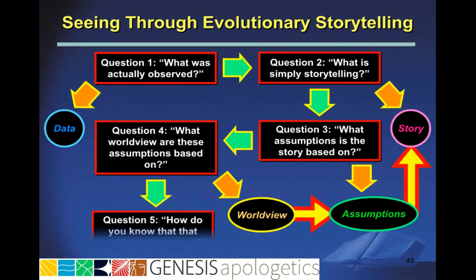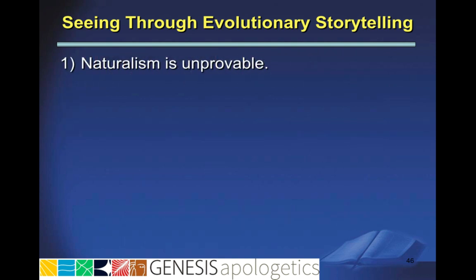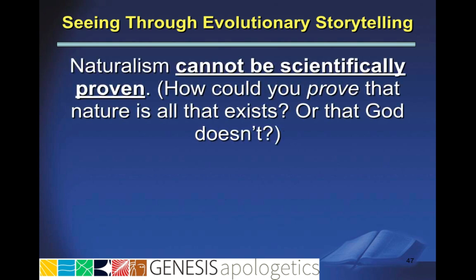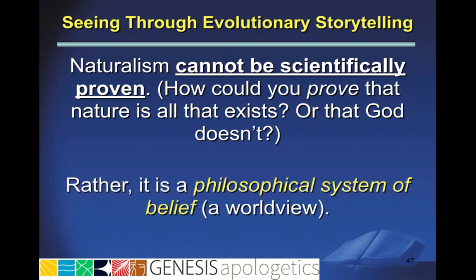The last question you want to ask is: how do you know that that worldview is correct? It's a really important question to ask, and I suspect that probably most teachers and even scientists have not really thought through this question. The first problem with the worldview of naturalism is that it is unprovable. Naturalism cannot be scientifically proven — how could you prove that nature is all that exists, or that God doesn't exist? Rather, naturalism is a philosophical system of belief, a worldview, something that people accept before they even look at the evidence.